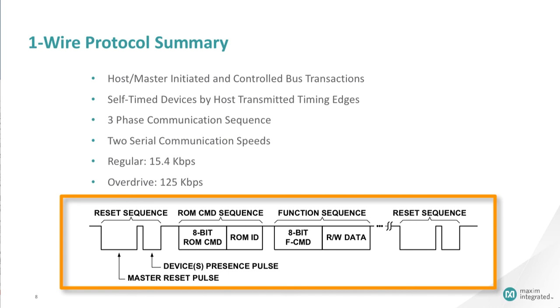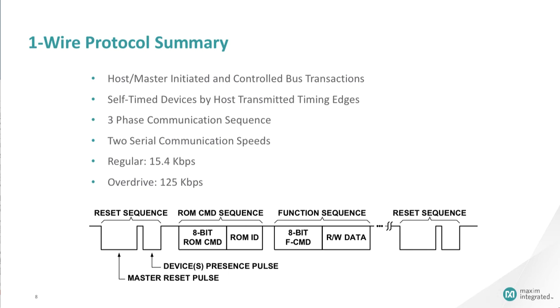Therefore, it's not required for the master to have prior knowledge of the slave device's ROM ID in order to communicate. Speeds of 15.4 kilobits per second in standard mode and 125 kilobits per second in overdrive mode are both supported.